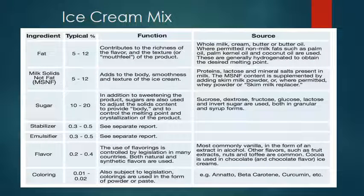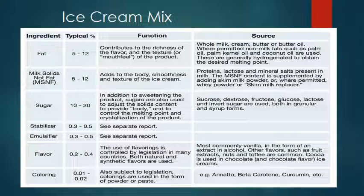About the ice cream mix: the major ingredients and their general ranges are — fat 5–12%, milk solids-not-fat 5–12%, sugar 10–20%, stabilizer 0.3–0.5%, emulsifier 0.3–0.5%. Each ingredient has specific functions: fat gives richness to the flavor; solids-not-fat, particularly protein, give body and smoothness in texture; and sugar provides sweetness.